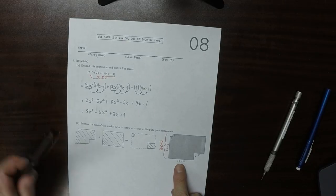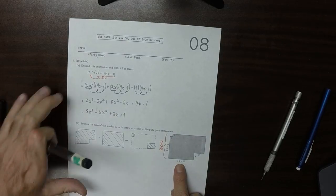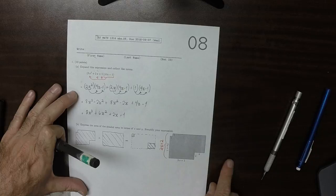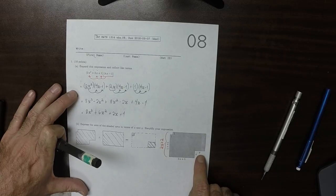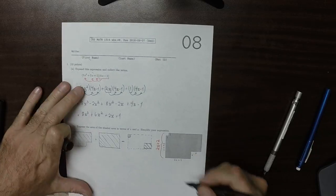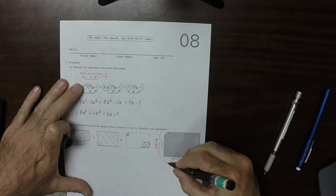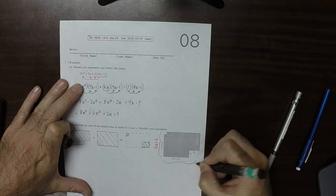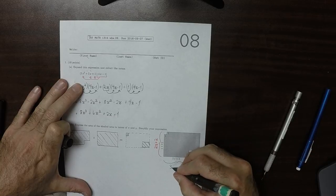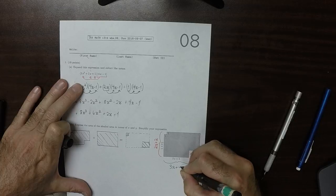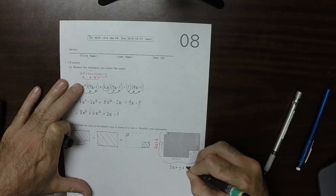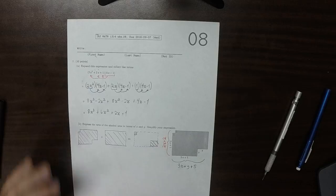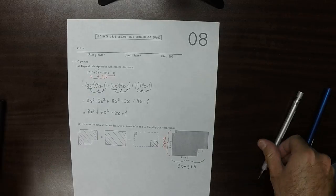And then this is 3x plus 5, and then that's just this bit, and to get all the way to the right, that's another y. So this would be 3x plus y plus 5. So that's the dimensions of the big rectangle.